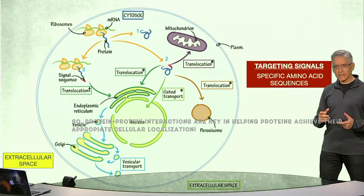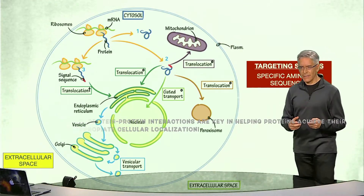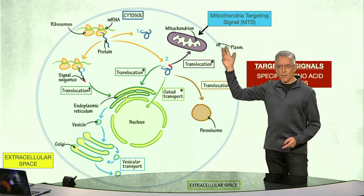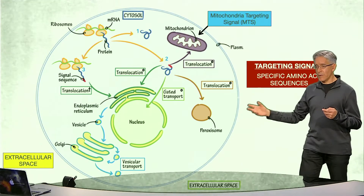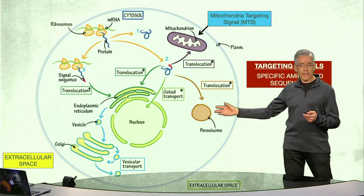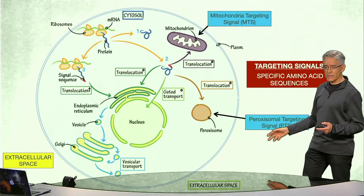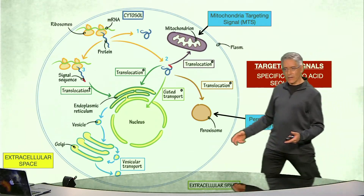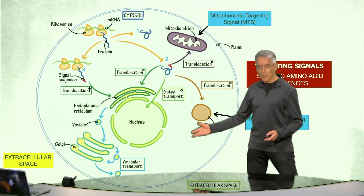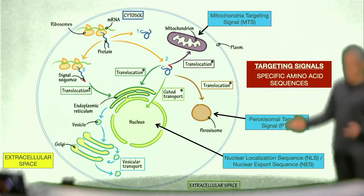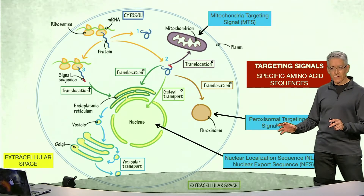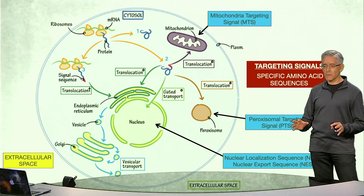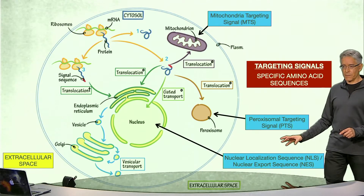For instance, proteins destined to be located in the mitochondria must have a mitochondrial targeting signal, or MTS. Proteins destined to go to peroxisomes must have peroxisome targeting signals, or PTS. And proteins targeted to go to the nucleus must contain nuclear localization signals. Interestingly, some of these proteins, once they reach the nucleus, also need to be exported out of it and contain nuclear export signals.